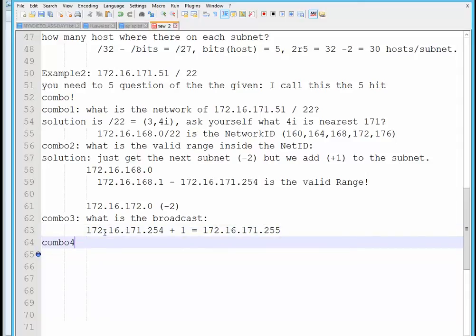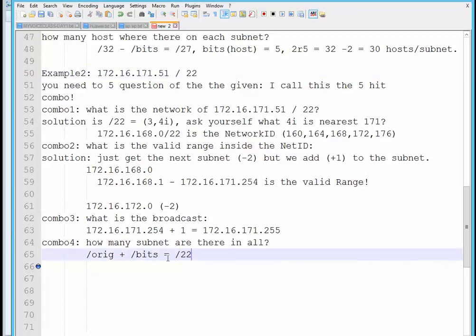Combo number four is how many subnets are there in all? Well, do you remember the formula we were using in class to get the subnets? It's original plus the bits. So we all know that this is a slash 22 from the given. And if you look at the range of the IP, it's quite obvious it's a class B. So a class B slash would be 16. So how many bits was added to 16 to get 22? So the obvious answer is six bits.